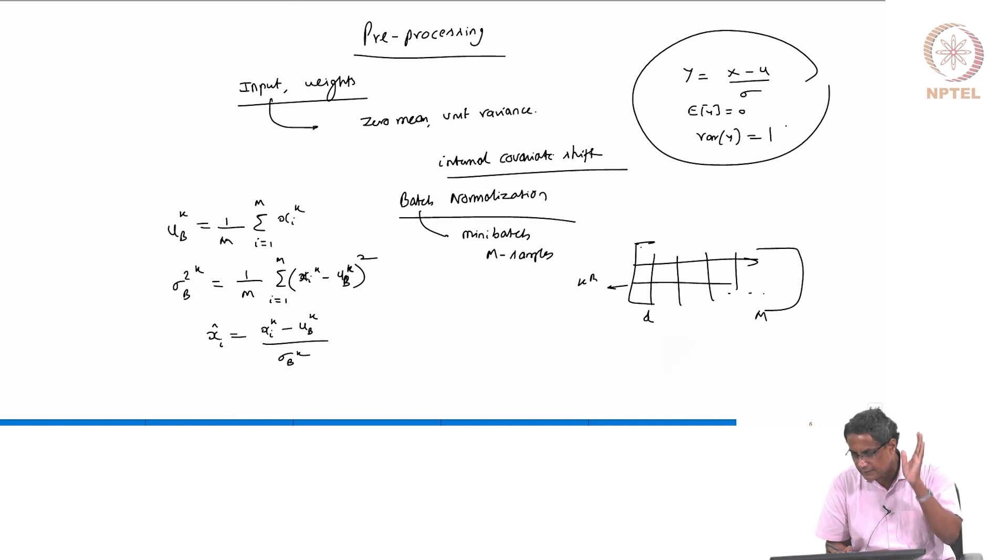The idea being that, if you keep on doing it at every input layer, then you are making sure that things are within bounds. This will ensure that your mean is, mean of x_i_hat_k is 0, it will ensure that variance of x_i_hat_k is 1.